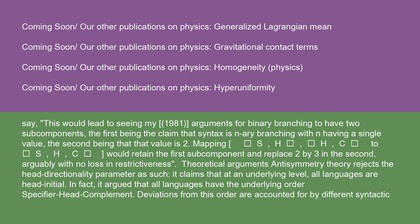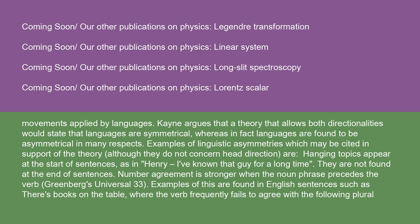Theoretical Arguments: Antisymmetry theory rejects the head directionality parameter as such. It claims that at an underlying level, all languages are head-initial — in fact, it argues that all languages have the underlying order specifier-head-complement. Deviations from this order are accounted for by different syntactic movements applied by languages. Kayne argues that a theory that allows both directionalities would state that languages are symmetrical, whereas in fact languages are found to be asymmetrical in many respects. Examples of linguistic asymmetries which may be cited in support of the theory include hanging topics, which appear at the start of sentences — as in 'Henry, I've known that guy for a long time' — and are not found at the end of sentences.